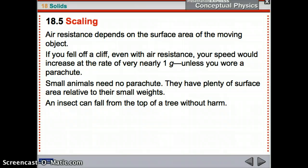Another one, air resistance, depends on the surface area of the moving object. If you fall off a cliff, even with air resistance, you're gonna continue to increase your speed until you hit that terminal velocity, unless you have a parachute which gives you more surface area. Right? So, you're gonna go really fast because your proportion of surface area to volume will be very different. Now, let's say a small animal doesn't need a parachute. They have lots and lots of surface area in comparison to the fact that they don't weigh a whole lot. So, you can drop an insect from the top of a tree and he will be just fine.